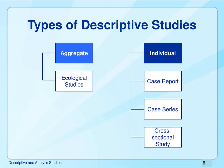Descriptive studies can be characterized by the types of data used. Data at a group level — such as data derived from a city, district, county, or even an entire island — are referred to as aggregate level data. An example would be the population growth rate for a country. Ecological studies are aggregate descriptive studies. Types of descriptive studies using individual level data include case reports, case series, and cross-sectional studies.